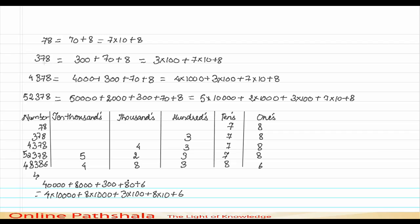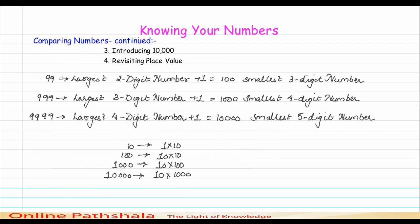So I hope that this lecture is clear. We have introduced 10,000 — a number that is one greater than 9999 — and we have revisited place value which we already studied in previous years. For the continuation of comparing numbers, please visit the next video. Thank you.